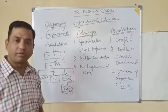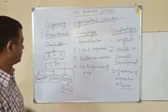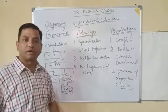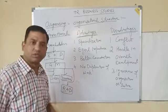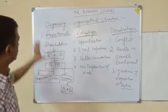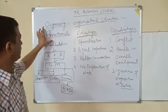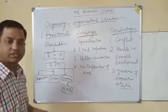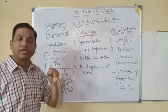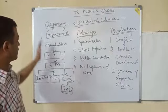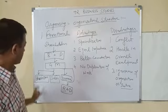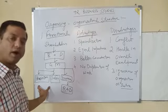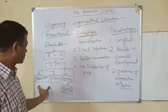Simply said, functional type of organizational structure is that structure in which different types of activities relating to one function are grouped into one department — like all activities relating to production go under the production department, and all activities relating to finance go under the finance department.